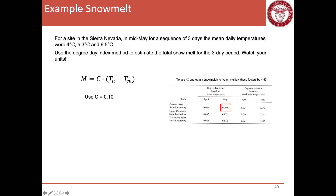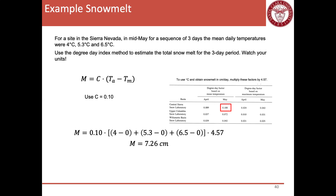So: M = 0.1 × [(4 − 0) + (5.3 − 0) + (6.5 − 0)] × 4.57, where 0°C is the base temperature at which snow begins to melt. That gives a total of 7.26 centimeters of snowpack melting. If you also want to know how much water that turns into, you need to apply the snow water equivalent. That's the end of snow melt for now — we're going to come back to this in a lab and talk about it in the context of climate change.